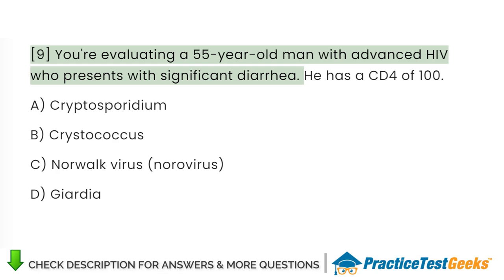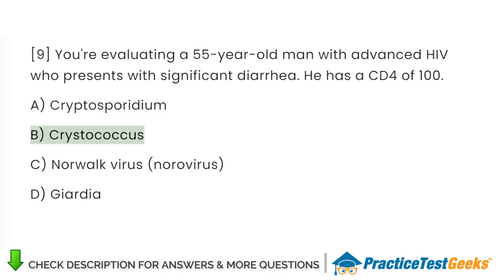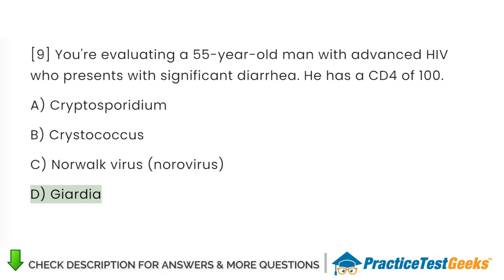You're evaluating a 55-year-old man with advanced HIV who presents with significant diarrhea. He has a CD4 of 100. A. Cryptosporidium. B. Cryptococcus. C. Norwalk virus, norovirus. D. Giardia.